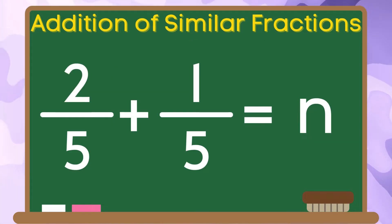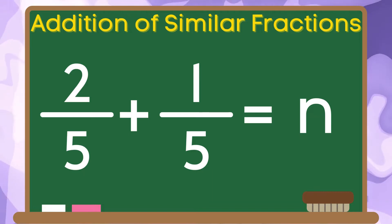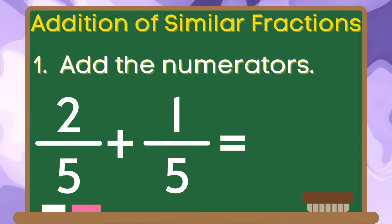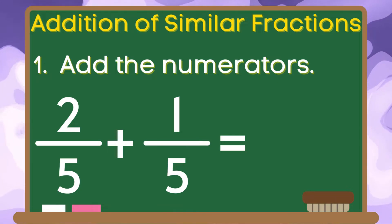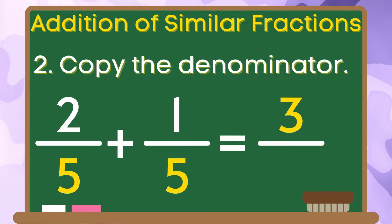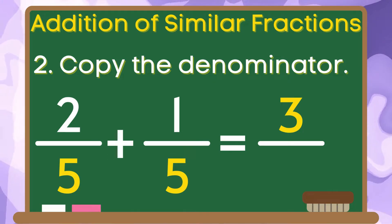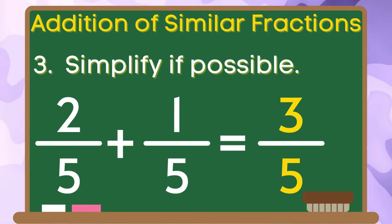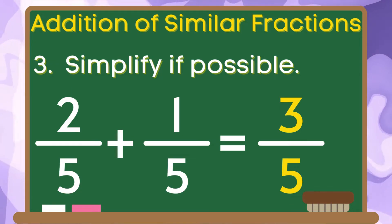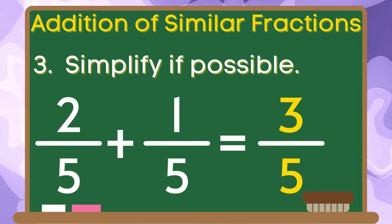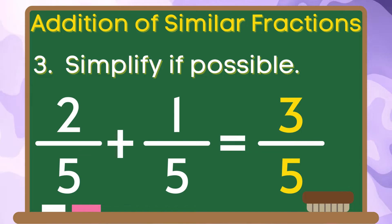Let's have an example. Two-fifths plus one-fifth is equal to n. Let us follow the steps in adding similar fractions. First, add the numerators: two plus one is equal to three. The second step is copy the denominator, so let us copy the denominator five to our answer. For the last step, let us simplify if possible. Three and five do not have common factors. Therefore, the sum of two-fifths and one-fifth is three-fifths.